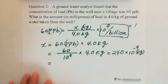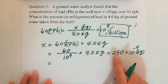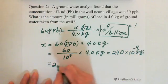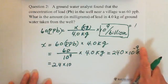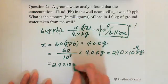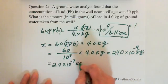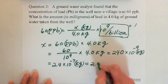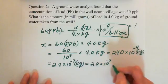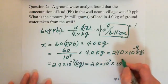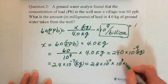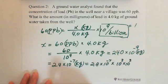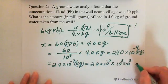Then we convert to milligrams, since that's what we're looking for. Multiply by 10 to the 3rd exponent to convert kilograms to grams, then multiply by another 10 to the 3rd exponent to convert grams to milligrams. So the exponent becomes: negative 7 plus 3 plus 3 equals negative 1. This gives 2.4 times 10 to the negative 1st exponent milligrams.